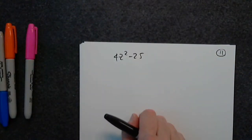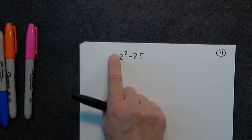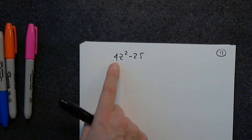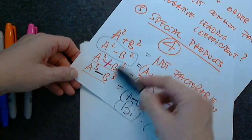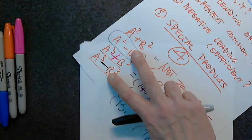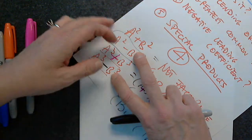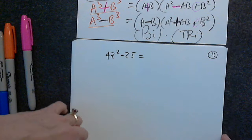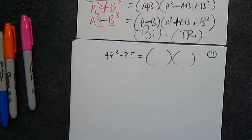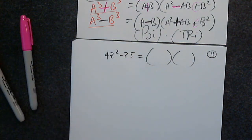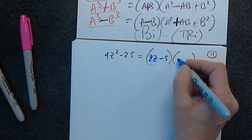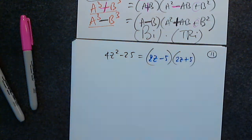So now, which special product works? Since it's a difference, I look at either difference of squares or difference of cubes. Since 4z² and 25 are both perfect squares, I cannot use the difference of cubes. So it's the difference of squares, which factors into two binomials: (2z − 5)(2z + 5). The difference of squares factors into (a − b)(a + b).